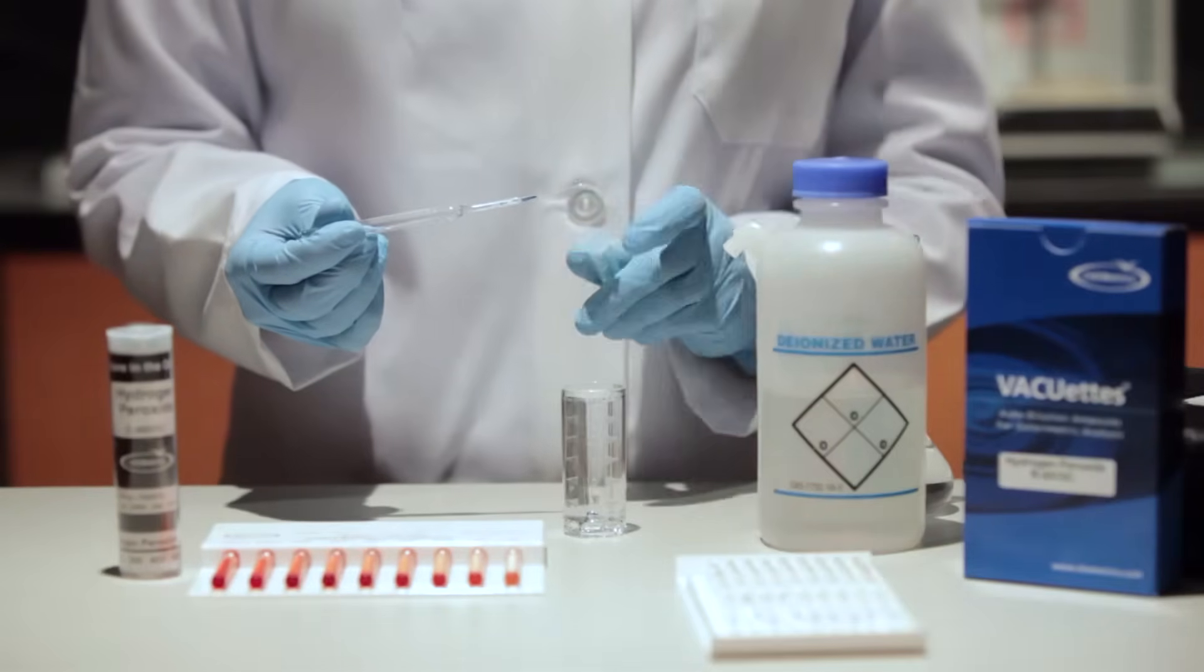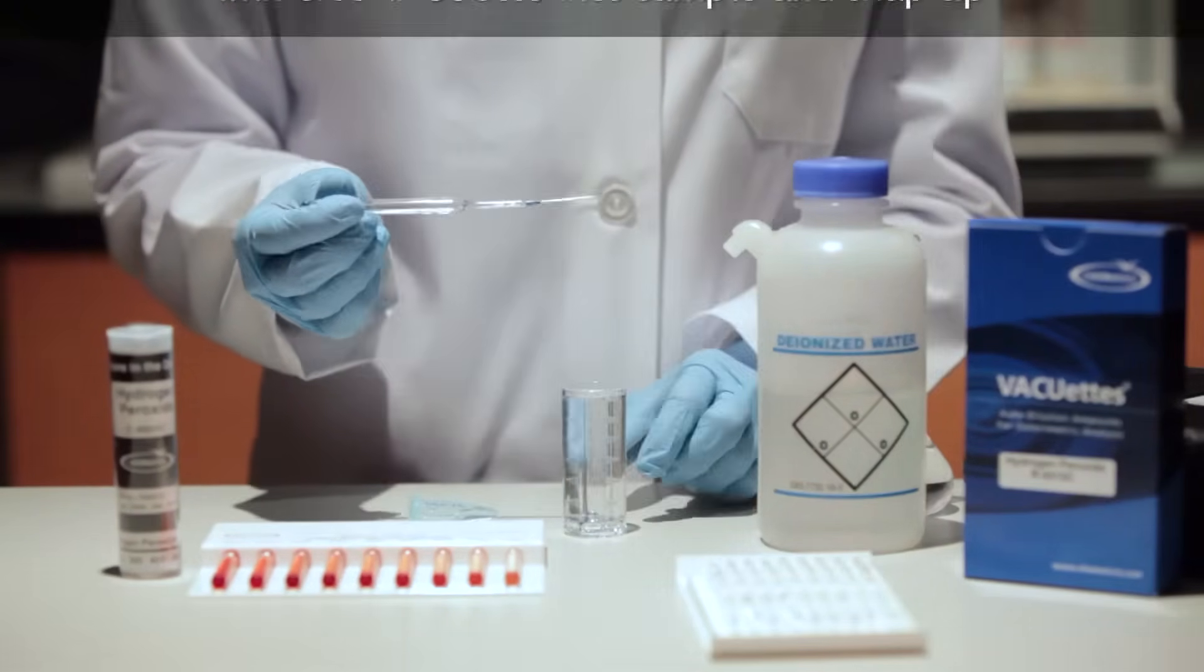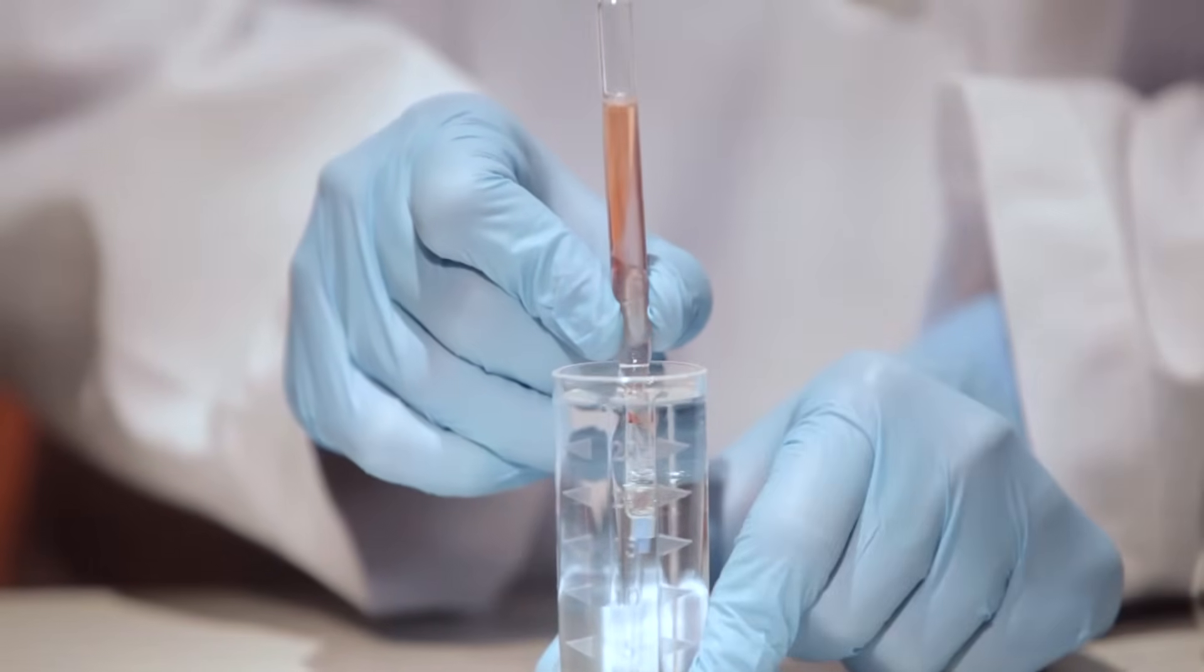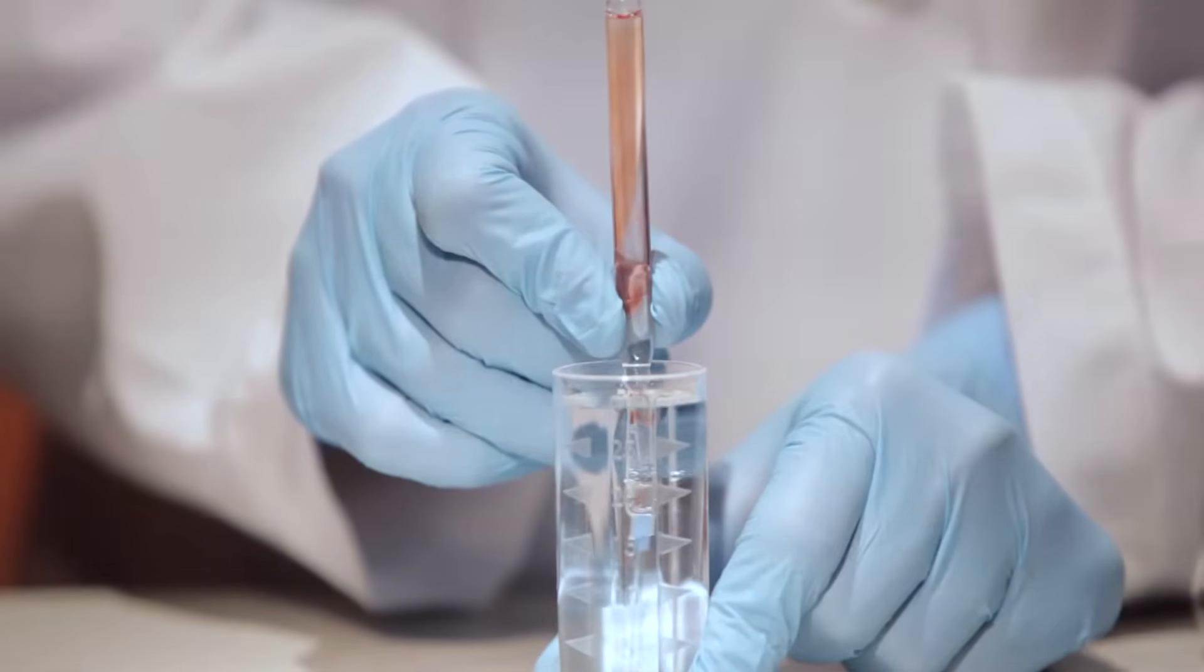Insert the VACUETS between the vertical tip guides on the inside of the diluter snapper cup and snap the tip. The ampule will fill leaving a bubble to facilitate mixing of the sample and reagent.